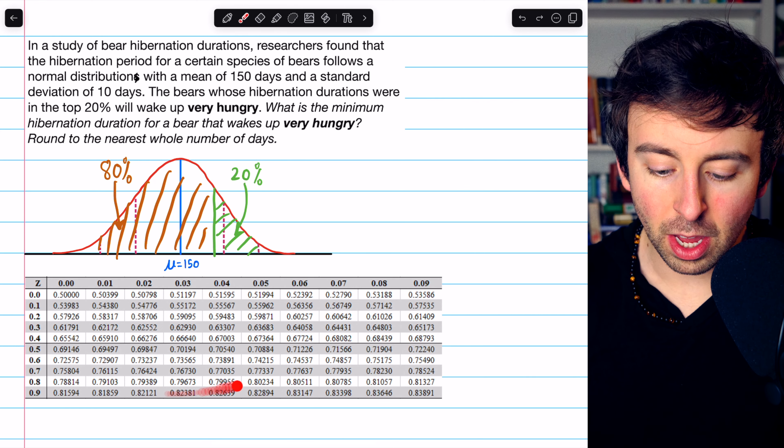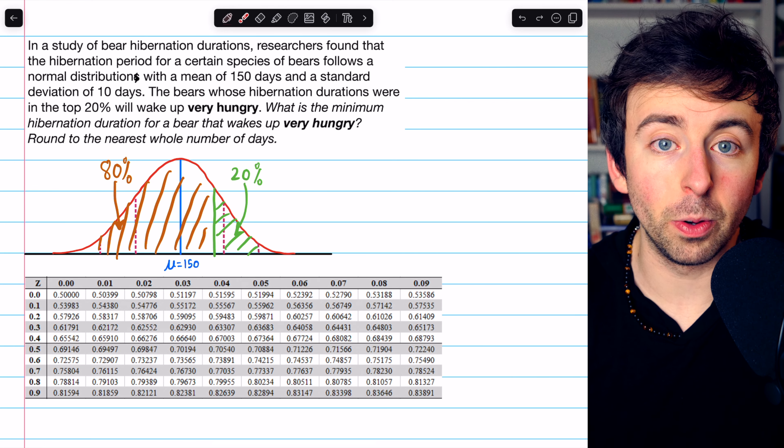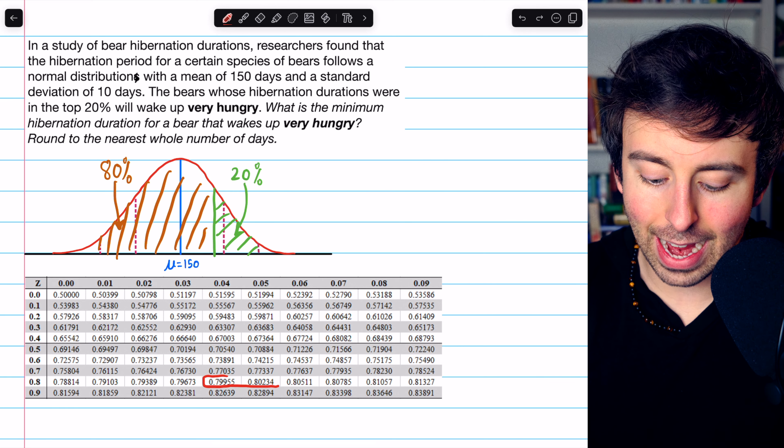So here on our z-score table, we need to look for 0.8 or whatever number is close. Right here we see the two closest numbers to 0.8.